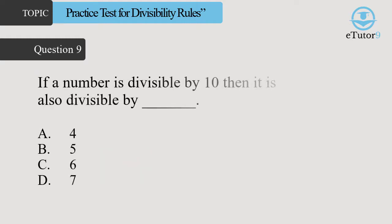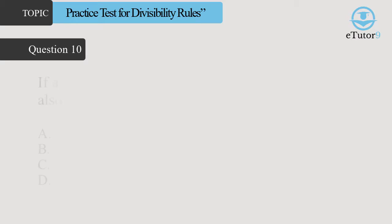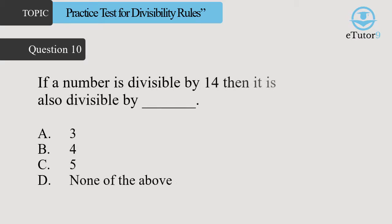Question 9: If a number is divisible by 10, then it is also divisible by dash. Answer is D, 4.